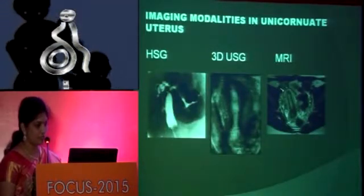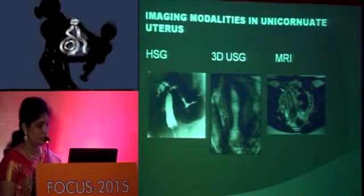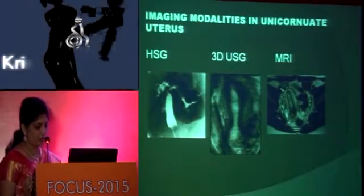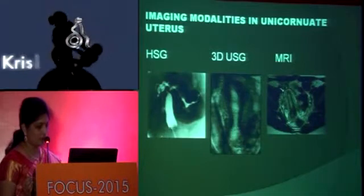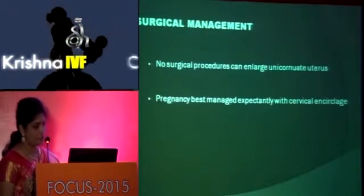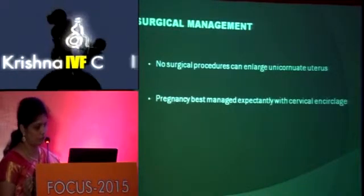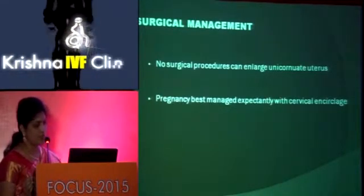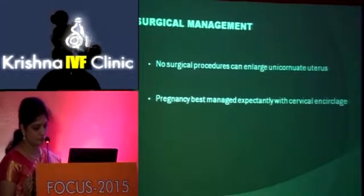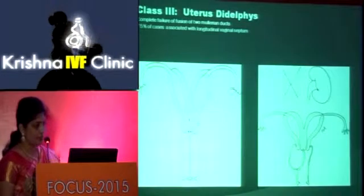These are the major imaging modalities in unicornuate uterus. On HSG, we cannot detect the rudimentary horn; laparoscopy and MRI are diagnostic. Regarding surgical management, no surgical procedures can enlarge the unicornuate uterus. Pregnancy is best managed expectantly with cervical cerclage. Class 3 is uterus didelphys.